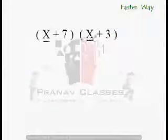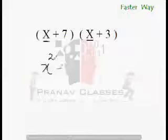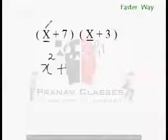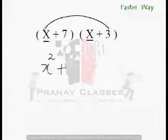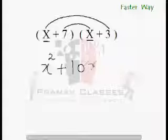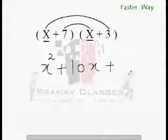x times x is x square plus now the middle term. Do the rainbow multiplication. So, 3 times x is 3x. 7 times x is 7x. 7x plus 3x is how much? 10x plus last term.